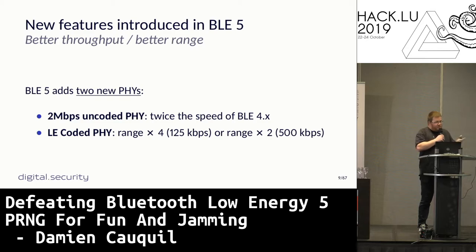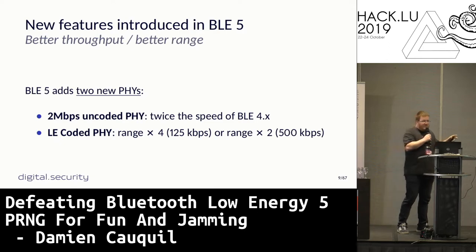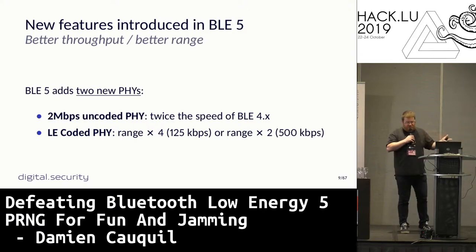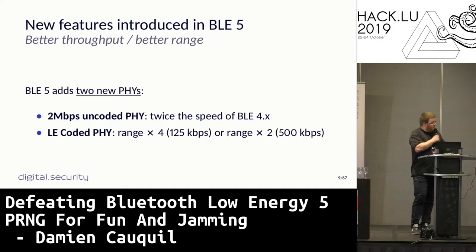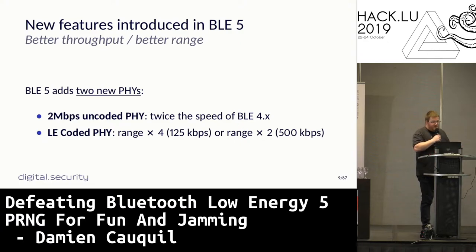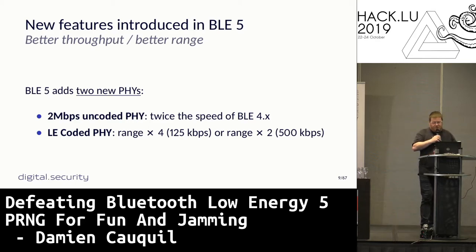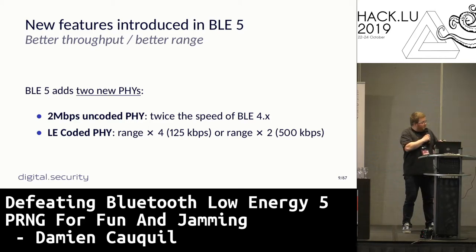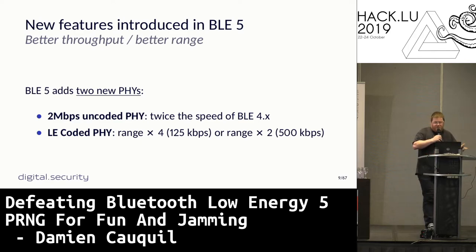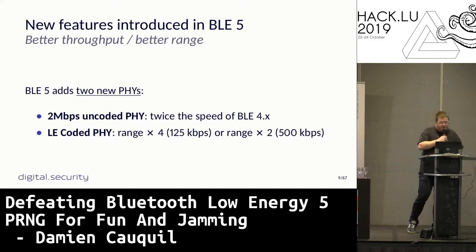To achieve the better throughput and range goals, BLE 5 adds two new PHY layers, which allow devices to exchange packets. The first new PHY is a 2 Mbps uncoded PHY — basically the same as BLE 4 but with doubled speed. The other PHY introduced is the coded PHY, used to increase the range of the protocol. If you send data at 125 kbps with the coded PHY, the range is four times the normal BLE range, and twice the range when sending at 500 kbps.